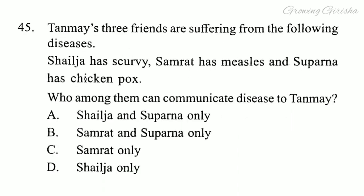Question 45. Tanmay's three friends are suffering from the following diseases: Shailja has scurvy, Samrat has measles, and Suparna has chicken pox. Who among them can communicate disease to Tanmay? Answer is option B: Samrat and Suparna only.